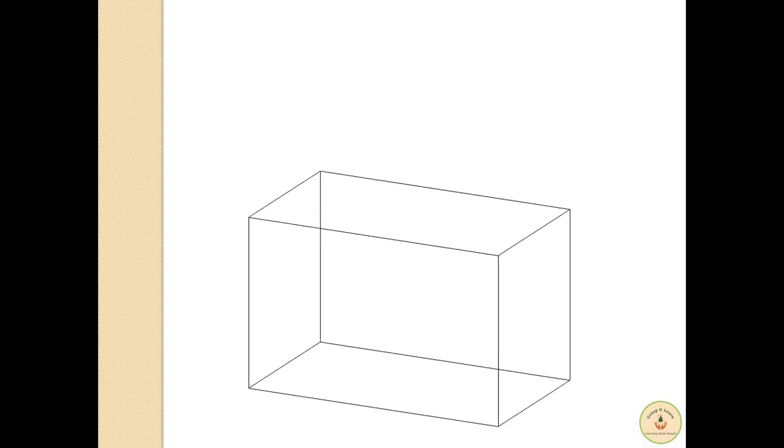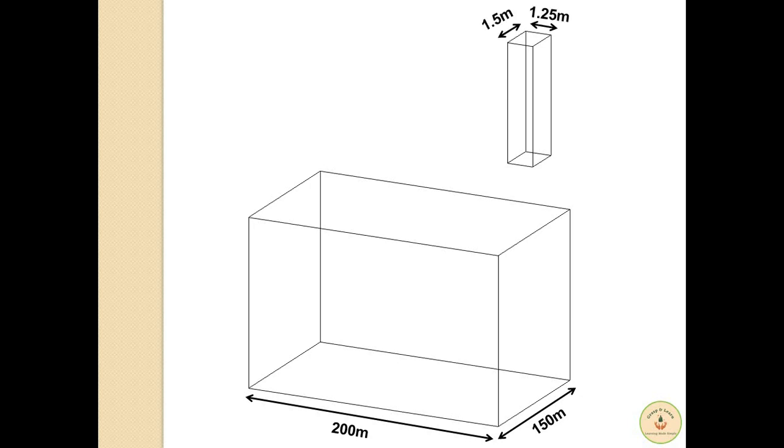So as per the question, we have two things here: one is a tank with dimensions 200m x 150m and another is a pipe with dimensions 1.5m x 1.25m. We can see that both these figures resemble a cuboid with one missing dimension, i.e. the height.